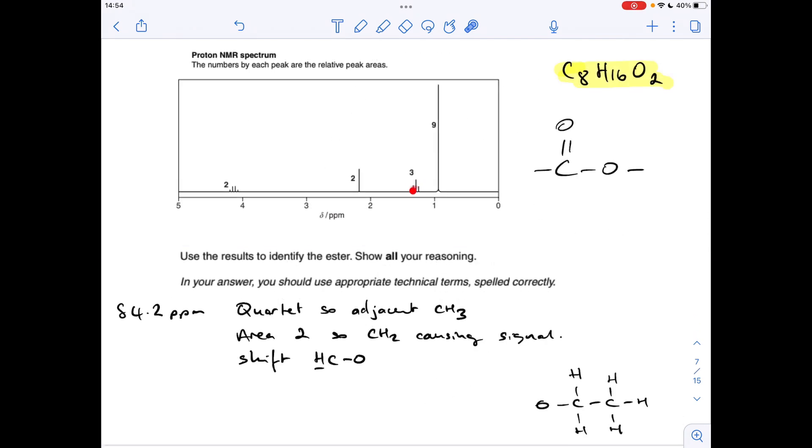So moving on to this signal now, this is what, 1.3 ppm? So it's a triplet. So there are two hydrogens adjacent to the ones causing this signal. It's got an area of 3, so it's a CH3 group causing the signal. And the shift is saying that it's an HCR environment. So basically,